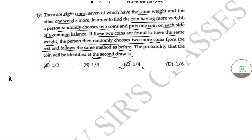the required probability is equal to probability coin not identified in first draw into probability coin identified in second draw.